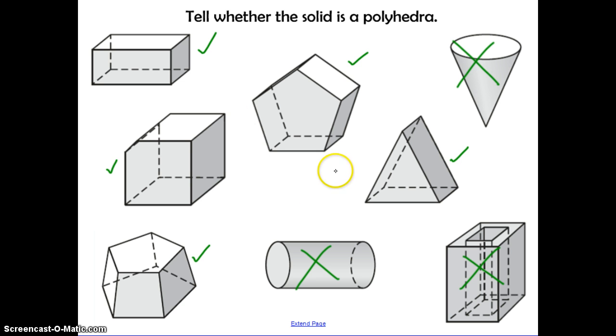So hopefully you got all the correct answers. This cone is not a polyhedron because this top is a circle, which is not a polygon. And if you were to try to find the face of this around it, that's also not a polygon.